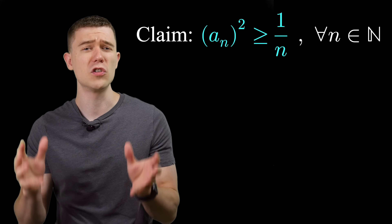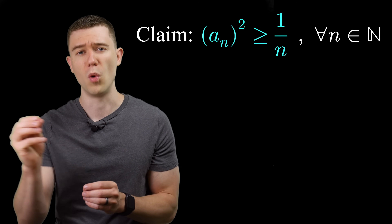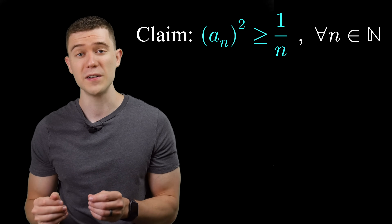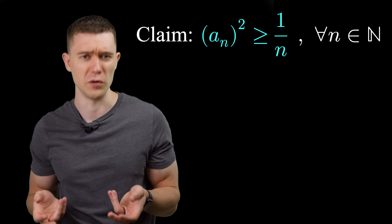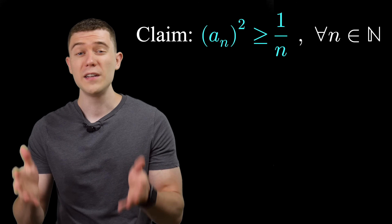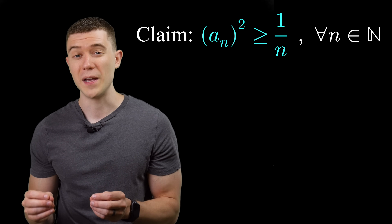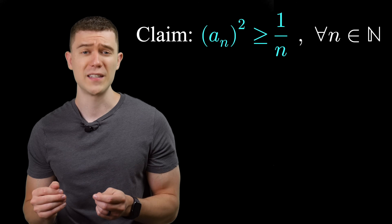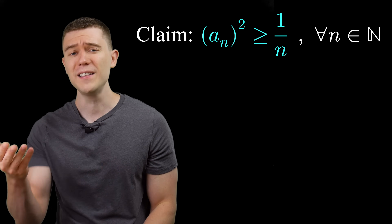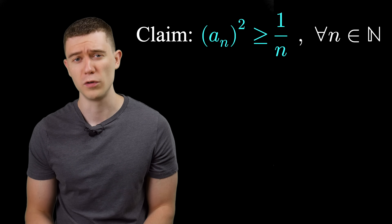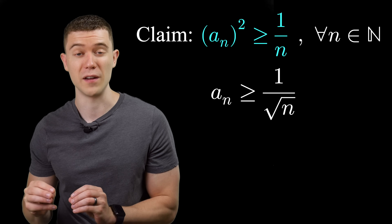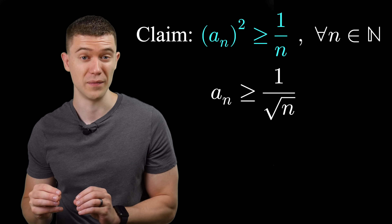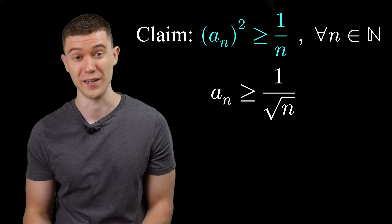Here's our claim: a sub n squared is greater than or equal to 1 over n. This is our comparison to the harmonic series — we can just take the sum of both sides. It's a bit easier to work with a sub n directly, so let's take the square root of both sides, restricting to n greater than or equal to 1 so we don't have to worry about signs.